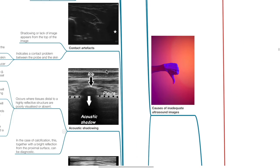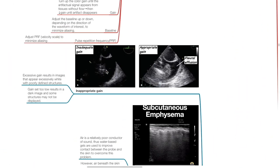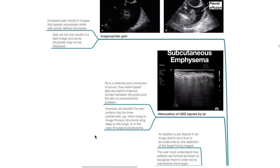Causes of inadequate ultrasound images include inappropriate gain: excessive gain results in images that appear excessively white with poorly defined structures, while gain set too low results in a dark image with some structures not displayed. Attenuation of ultrasound signals by air: air is a relatively poor conductor of sound, thus water-based gels are used to improve contact between the probe and the skin. However, air beneath the skin surface may be more problematic — for example, when trying to image thoracic structures lying deep to the lungs, or in the case of subcutaneous emphysema.